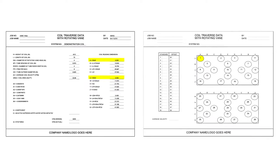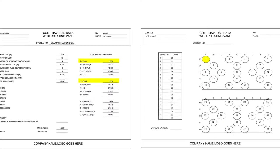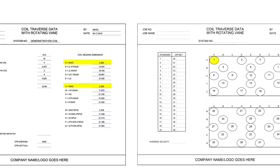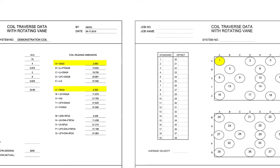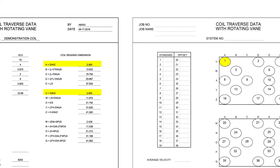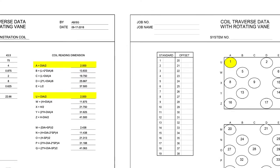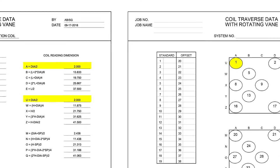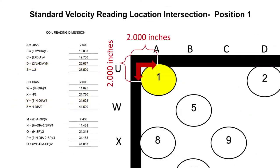Position 1 is located in the top left at the intersection of A and U. The value for A equals the diameter of rotating vane head divided by 2, and the value for U equals the diameter of rotating vane head divided by 2. The standard velocity reading location for position 1 is at the intersection of A equals 2 inches and U equals 2 inches.